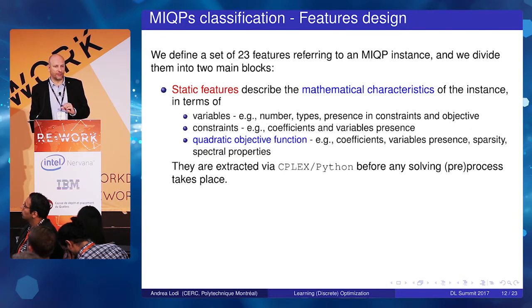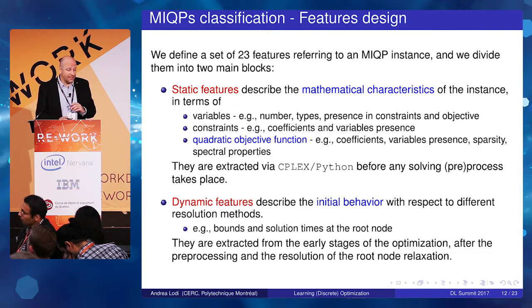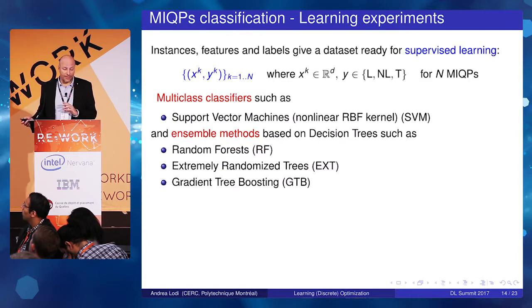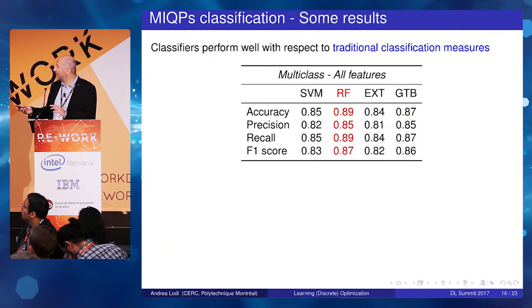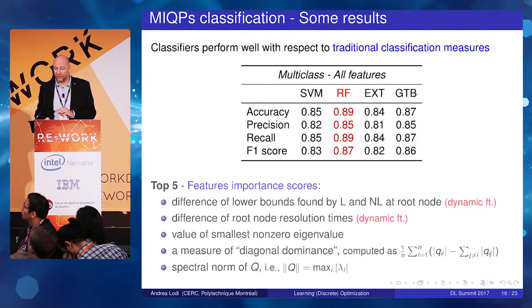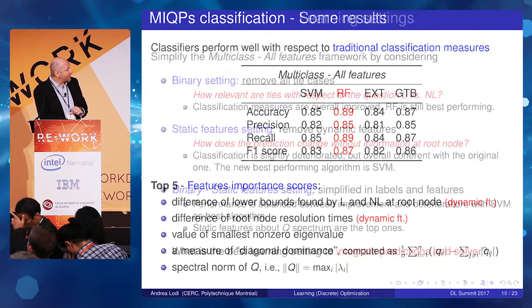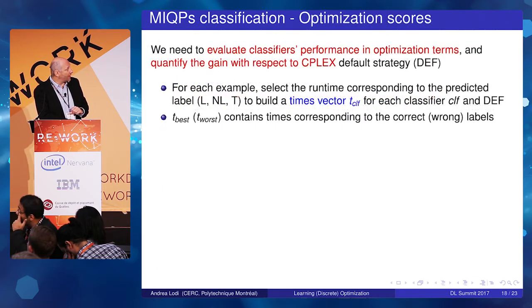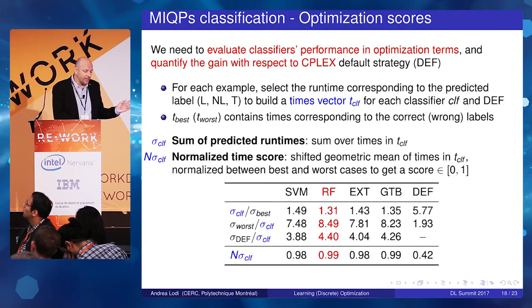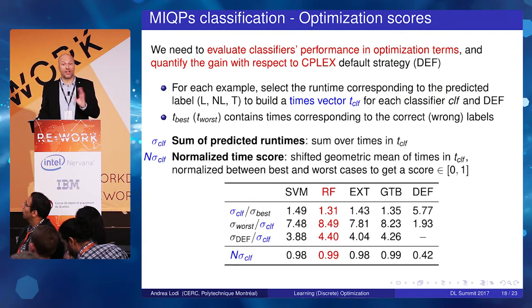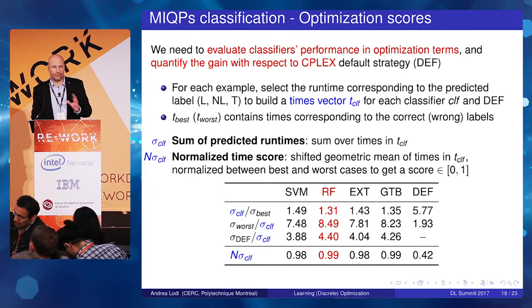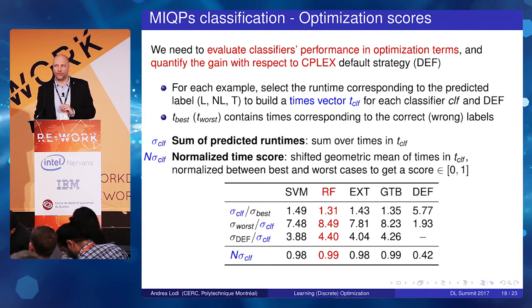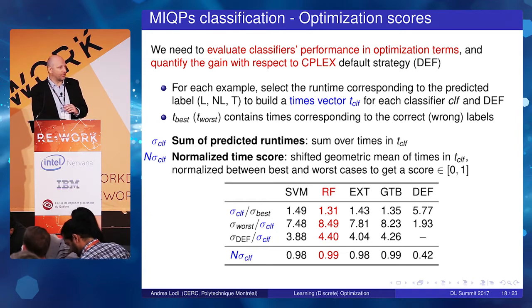We are experimenting with ensemble methods such as random forests, which offer some interpretability, as well as developing new approaches with deep learning. Currently, ensemble methods give very good results: the accuracy of these models is high, and we are able to save a lot of computation time in solving these problems. Generalization over large sets of instances from company datasets — such as IBM's — remains an open challenge we are still working on.